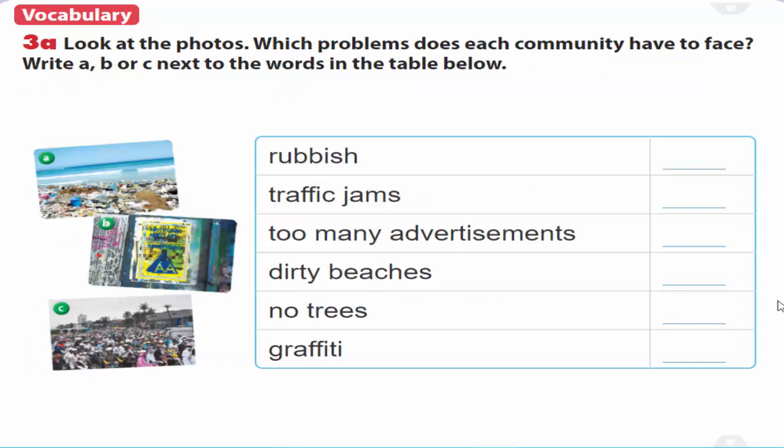3. A. Look at the photos. Which problems does each community have to face? Write A, B or C next to the words in the table below.